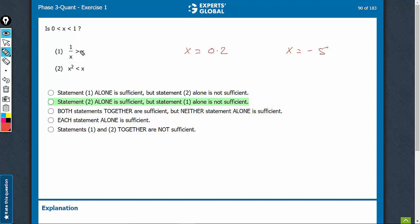Imagine, 1 upon negative 5 would be greater than negative 5. In this case, the answer would be yes. In this case, the answer would be no. Yes and no, both are possible. So, statement 1 is not sufficient.